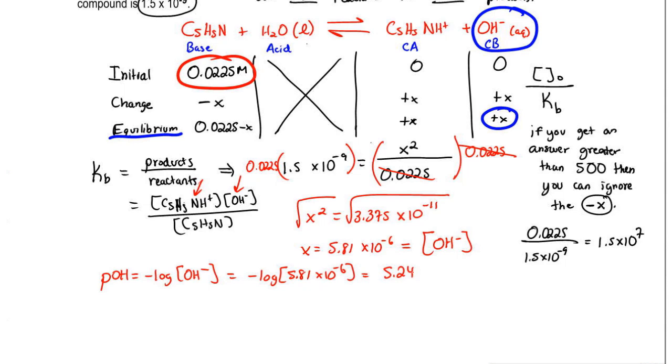But I didn't ask for POH, I asked for pH. So now you're going to say pH plus POH equals 14. pH equals 14 minus POH, so it equals 14 minus 5.24. So your answer here would be 8.76.